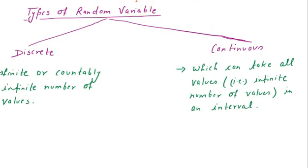A random variable maps outcomes to real numbers. It is represented or denoted by capital letters — uppercase letters such as X, Y, Z and so on.